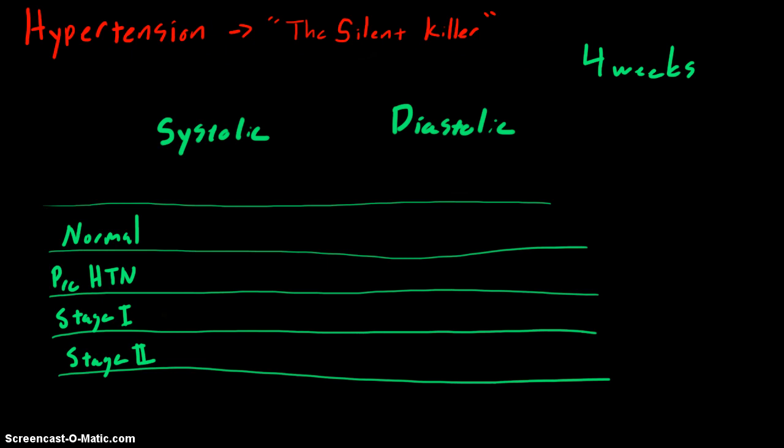So if one of your patients were to come in tomorrow and her blood pressure was elevated, would you say that she has hypertension? Probably not. You would say she needs to come back in at least four weeks and we'll recheck. If her blood pressure is elevated again at that time, then maybe we'll be more comfortable in saying that she has hypertension.